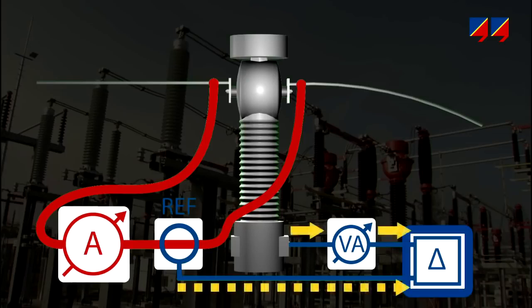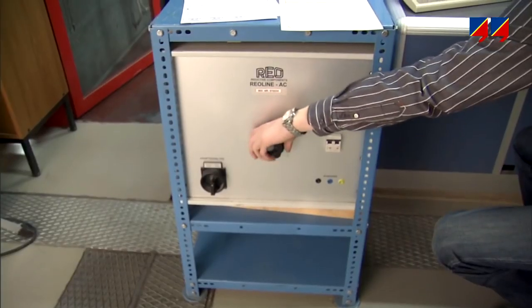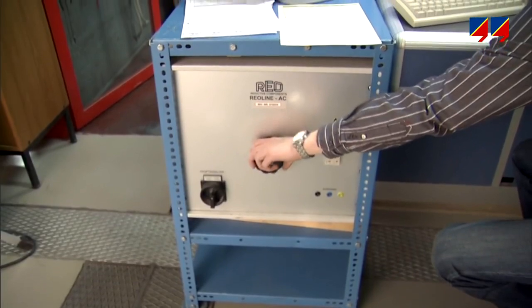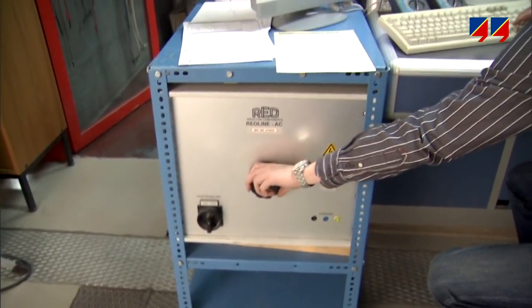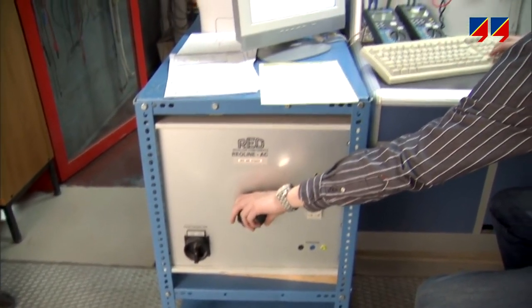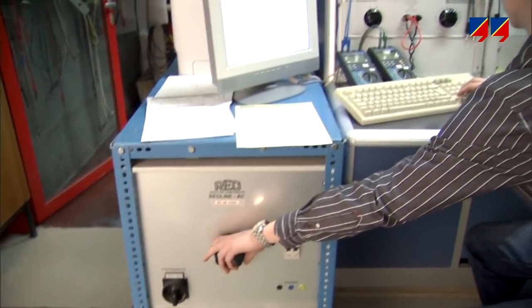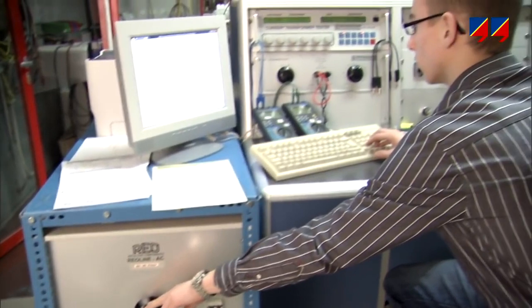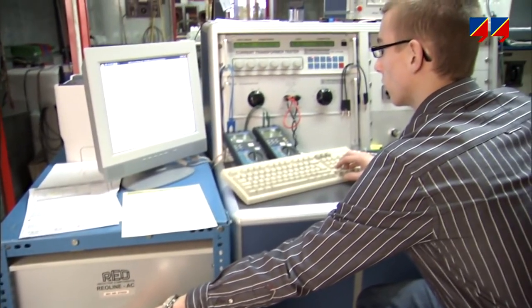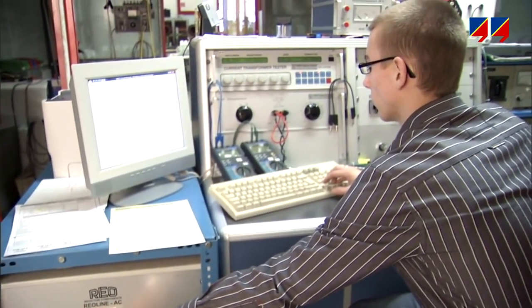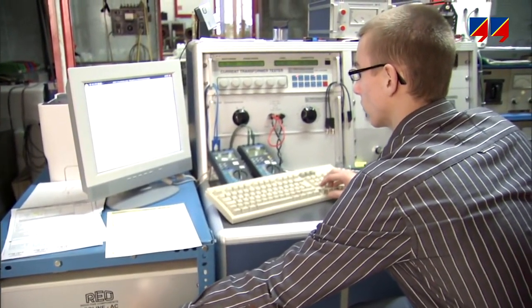Via a measurement bridge, the output currents from both CTs are compared in amplitude and phase. With this method, all current and burden value combinations defined by the relevant international standards can be verified, and the CT's compliance can be assessed.